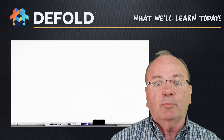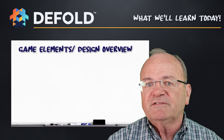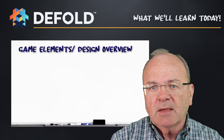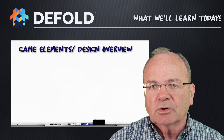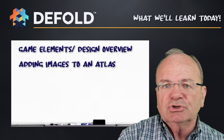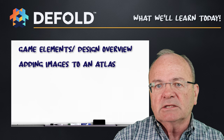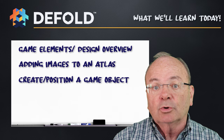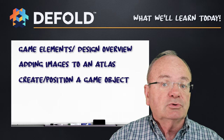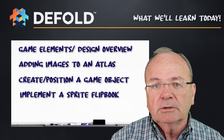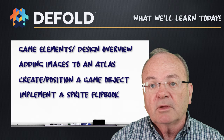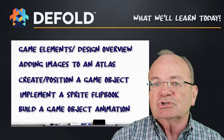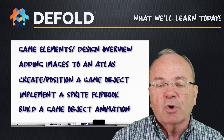Let's start with a quick whiteboard review of what we're going to learn today. We're going to focus on five general topics. First, we'll review the key Defold elements: collections, game objects, and components. Second, we'll add an image to our project, include it with an atlas, and add it as a sprite under a game object. Third, we'll learn how to create and position a game object. Finally, we'll cover two animation techniques: use of a flipbook, and the go.animate function for changing location, size, or opacity.